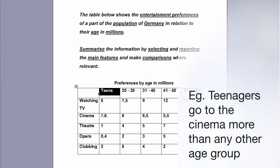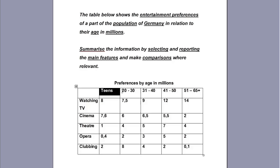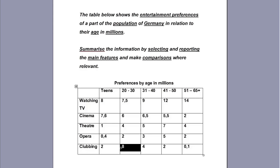Teenagers go to the cinema more than any other age group. When they reach their 20s, clubbing seems to be the most popular choice, only to drop down considerably among the 30 and 40 year olds and as we move on. Again, you do not have to compare everything — these are just examples to help you. You can choose your own, but it will help if you start from the highest, the lowest, and the stable values. Useful vocabulary about comparisons can be found in this video over here.